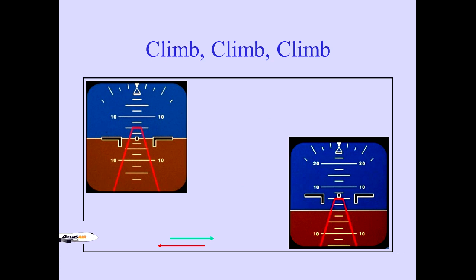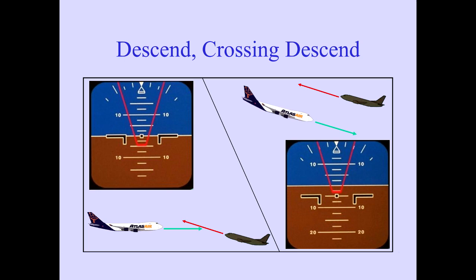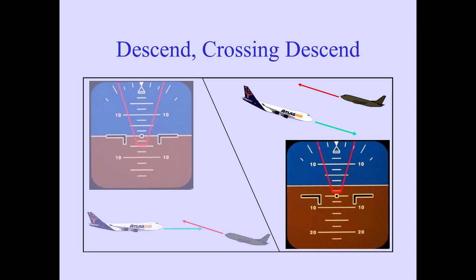TCAS commands a climb; a voice enunciation 'Climb, Climb' will sound, and the red pitch command will appear on the PFD. Climb at the pitch required to keep the airplane outside the red area. In this example, a Descend, Crossing, Descend command is given: 'Descend, Crossing, Descend.' Smoothly and promptly start a descent, crossing through the threat aircraft's altitude, but with safe separation.